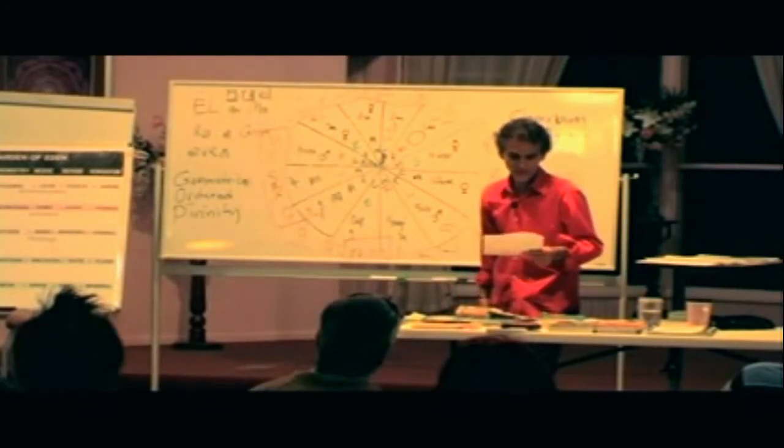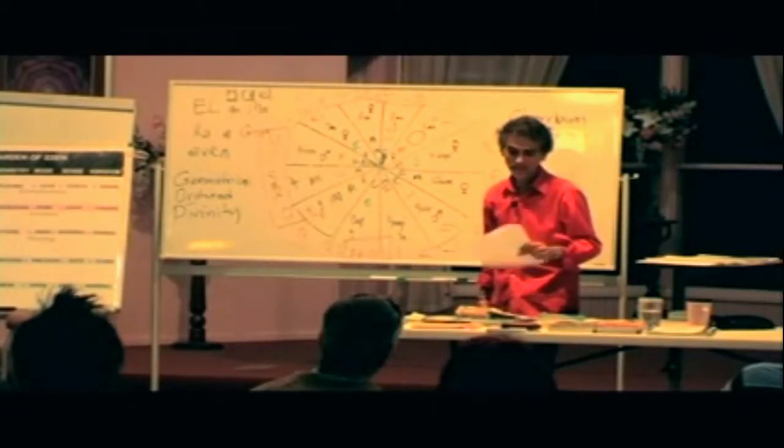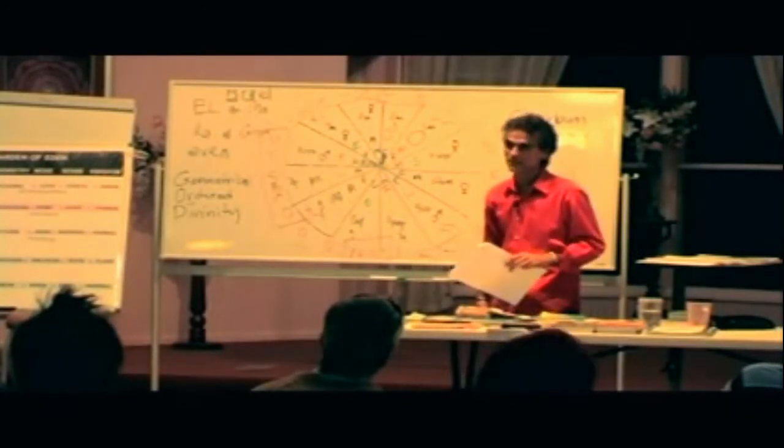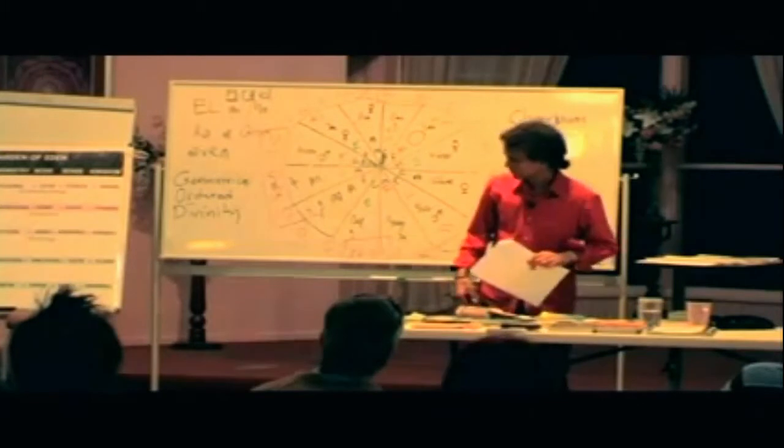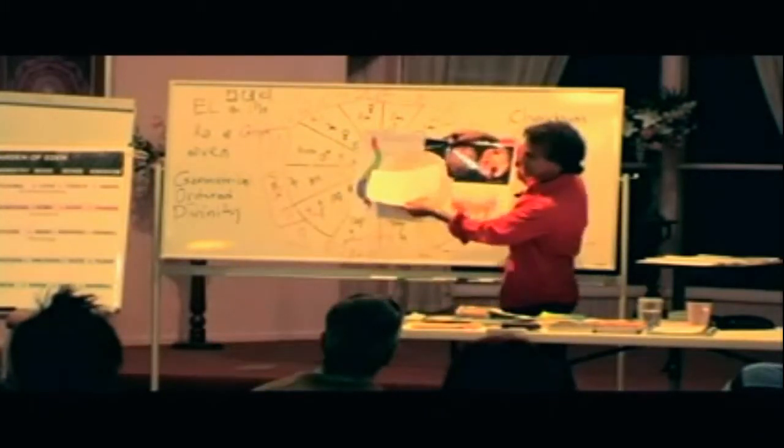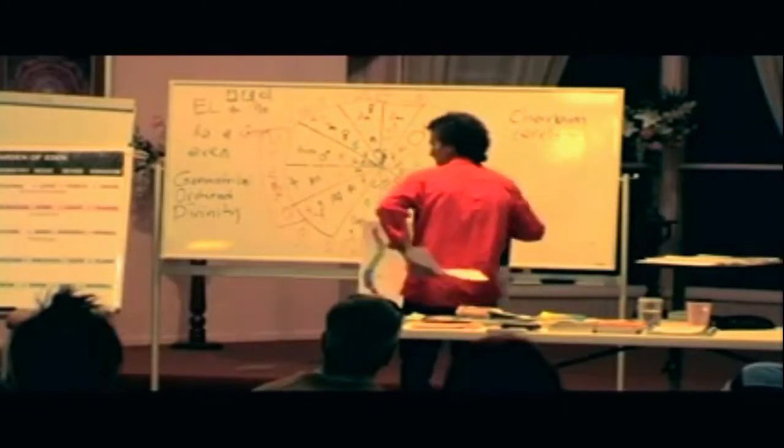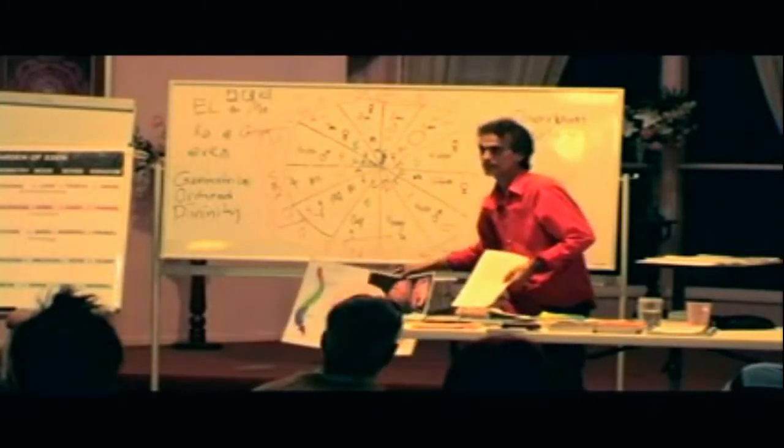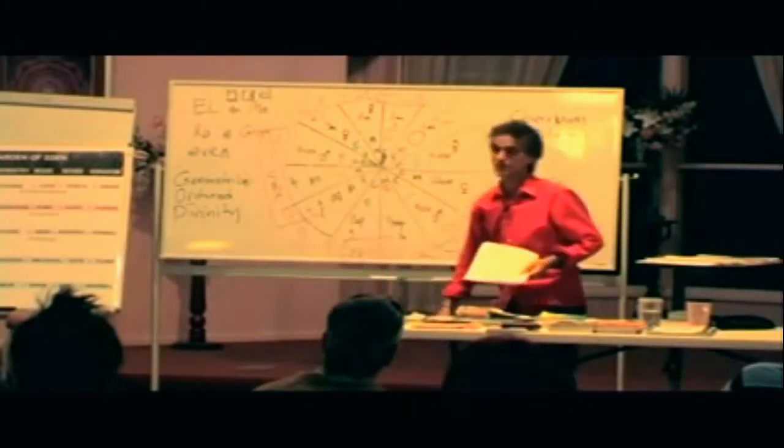Well, here are some of the scriptures. Revelation 5:1. Then I saw in the right hand of him who was seated on the throne a scroll written within and on the back sealed with seven seals. This is on the back. On your back, on the spine, that's where the seven seals are. They are the seven chakras.